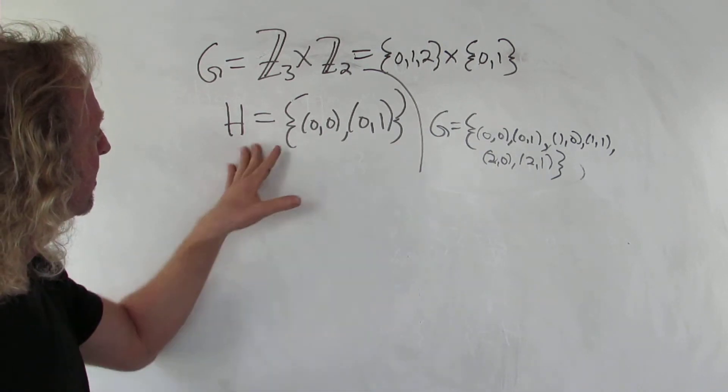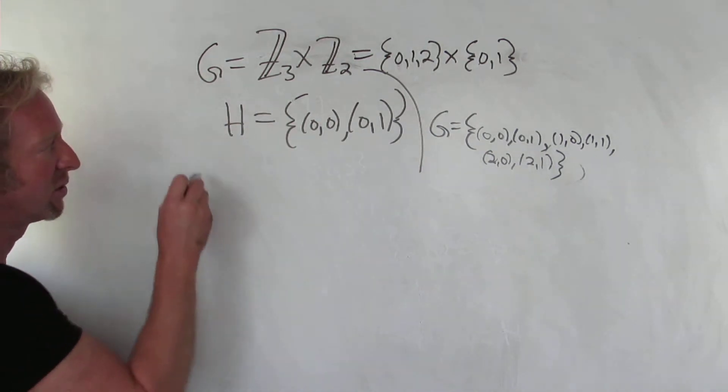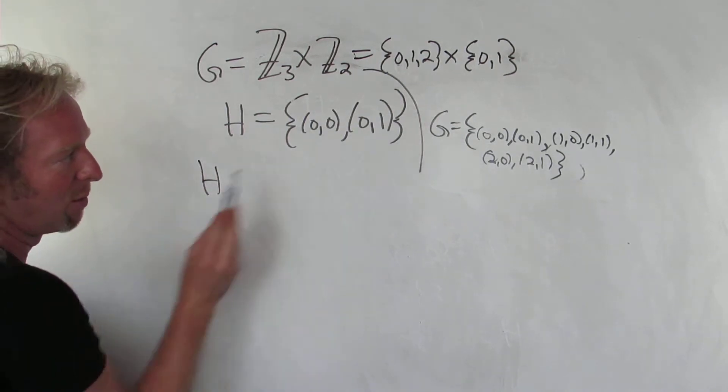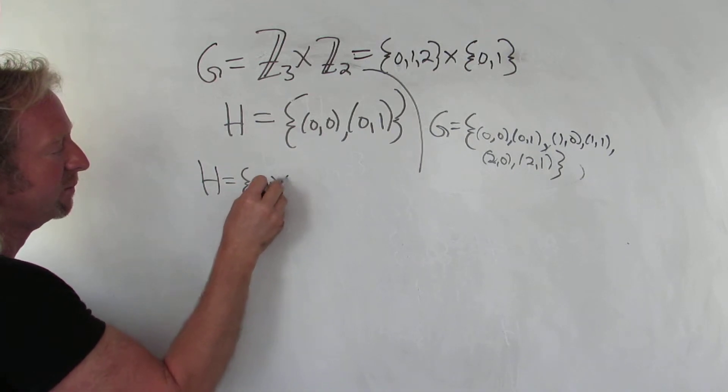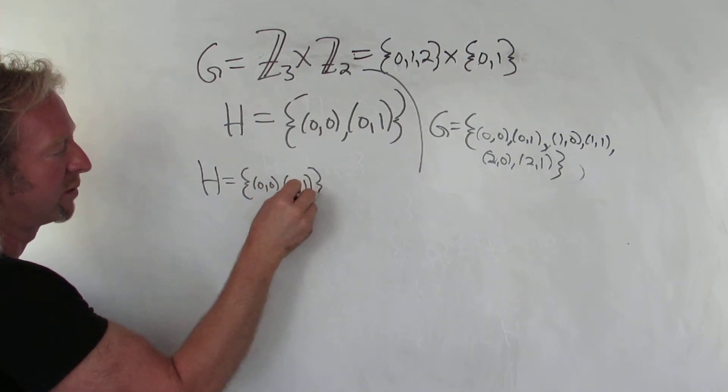So we have to find all the cosets for H. So we'll just start adding stuff. H is obviously H plus 0. So I won't bother writing that one down. So we have H, that's one of the cosets.